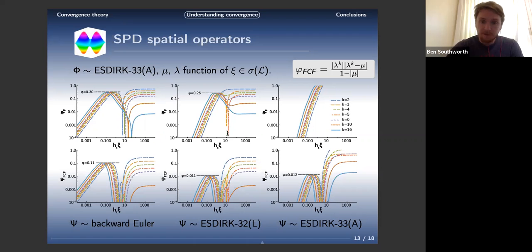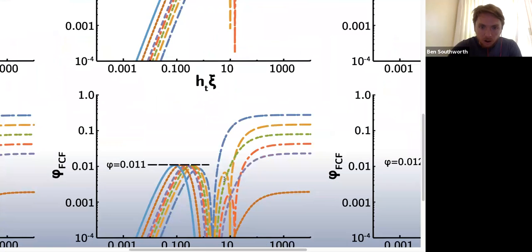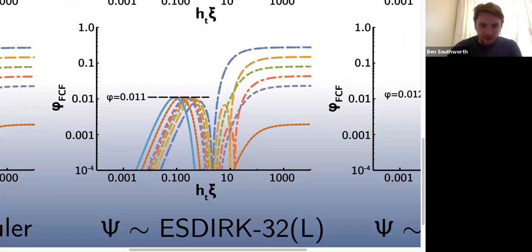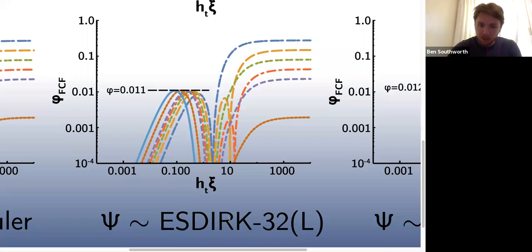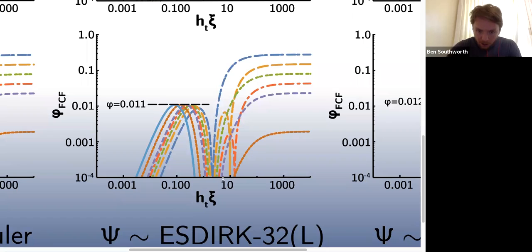First, convergence can be very sensitive to DT and the spatial eigenvalue. For example, on this one where we use an ESDIRK 32 L-stable on the coarse grid with FCF relaxation, if we have DTZ like 5, we get convergence 0.01, maximum convergence, so that's fast. If we bump over to 10, so if we increase our spatial eigenvalue or DT by a factor of two, our convergence is larger than 0.1. It's 0.25 maybe, and all the way up here it's closer to 0.5. We get serious degradation in convergence, two to five times slower, just by increasing our time step or our spatial eigenvalue by a factor of two.